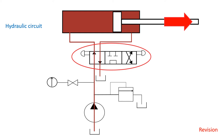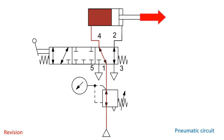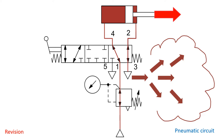There's one significant difference between hydraulic and pneumatic systems. In a hydraulic system, the media — which is the hydraulic oil — is returned to a reservoir and reused. Here we have the exactly the same circuit but using pneumatics, where the exhaust air is vented to the atmosphere.